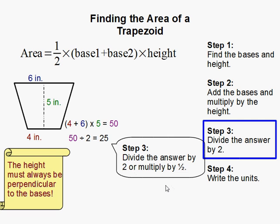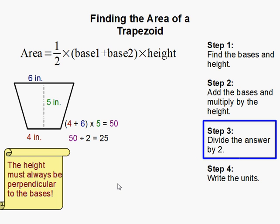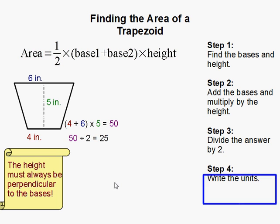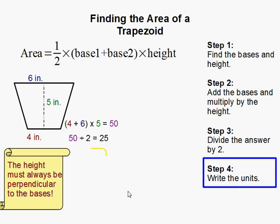Same thing as multiplying by half. And lastly, we have to make sure we write the units. So my numerical answer was 25, but we have to make sure it's inches squared because this is an area. You have to make sure units are squared.